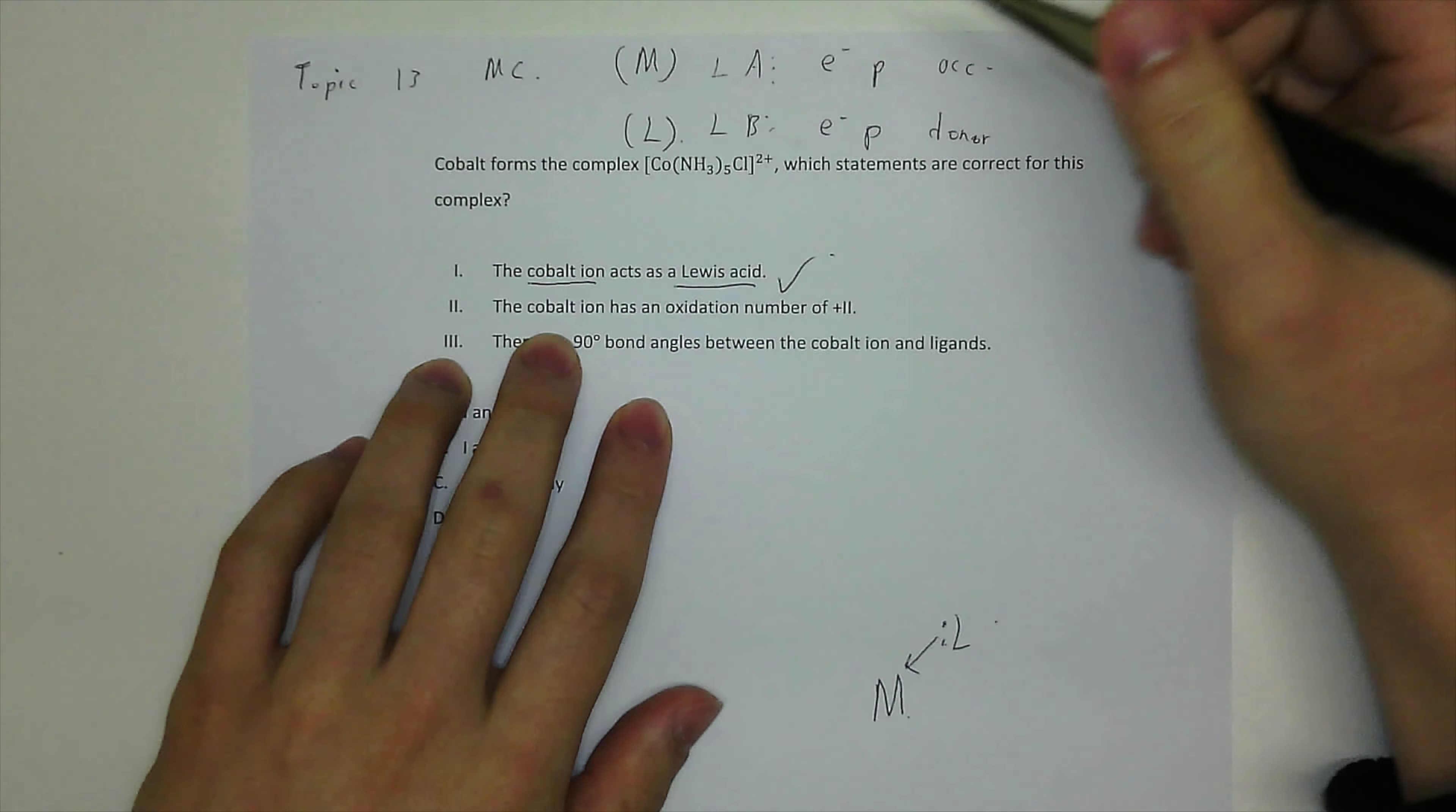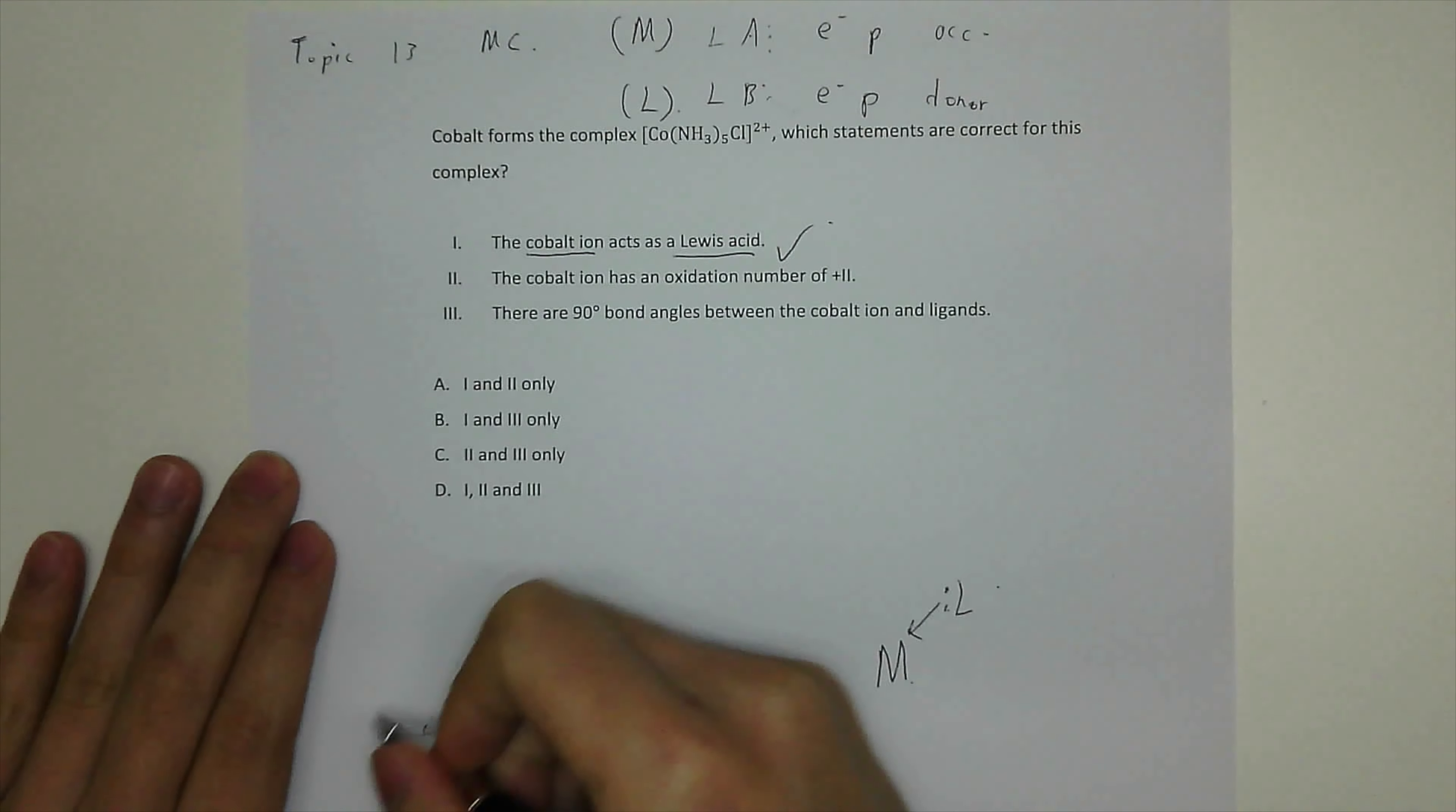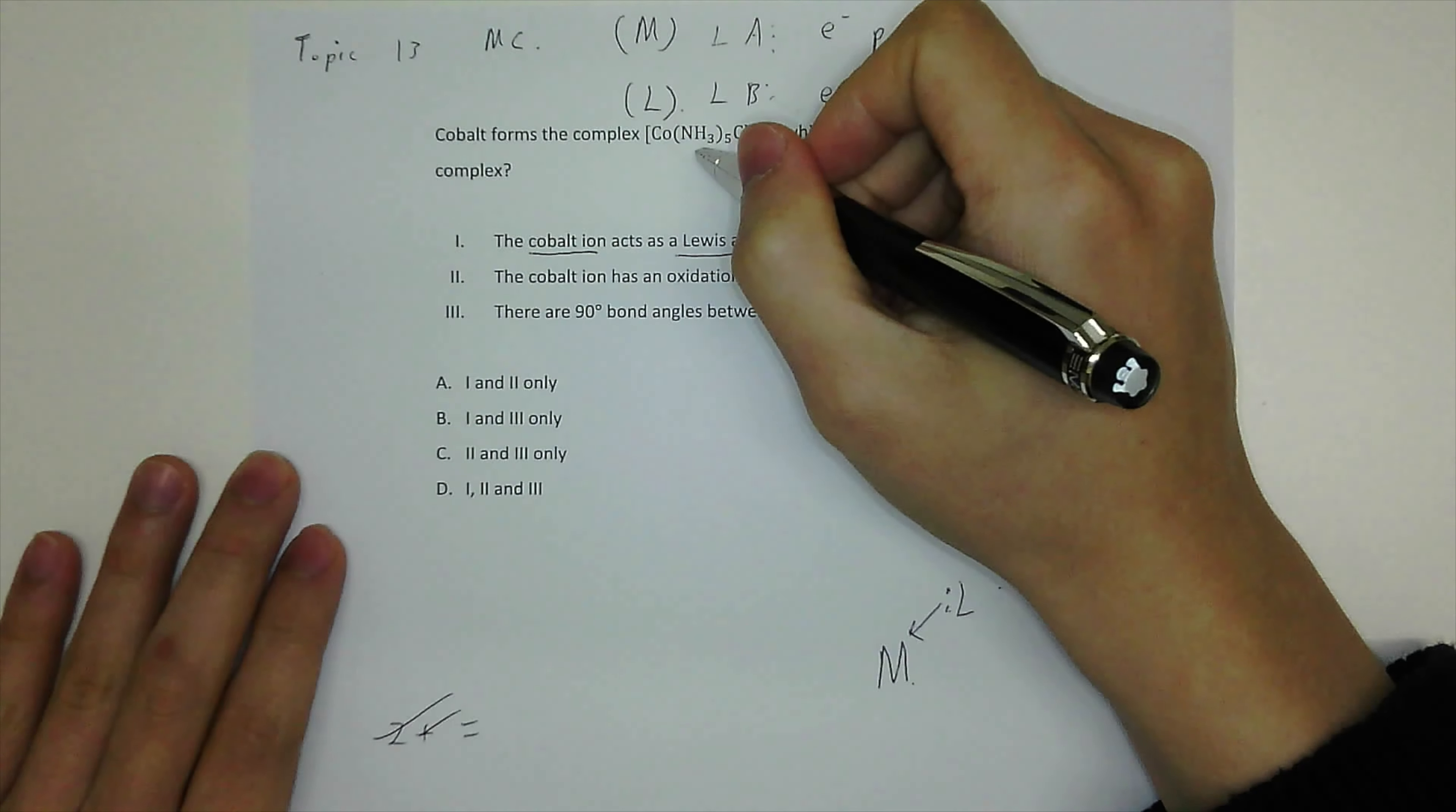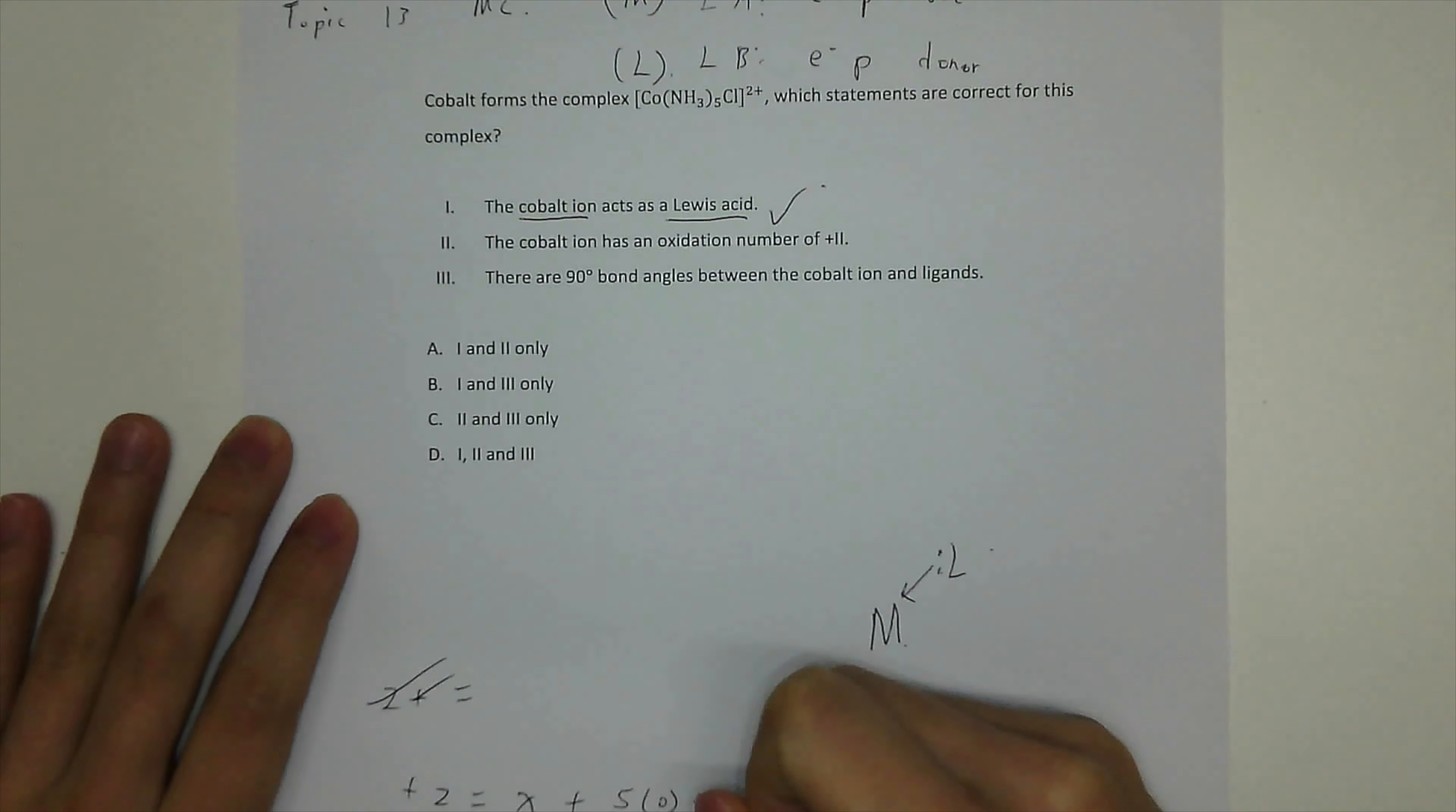sum of the charge of the ligand and the metal ion equals to the charge of the complex ion. So two positive charge equals, plus two is equal, the oxidation number for cobalt is unknown, so let's be x, plus five ammonia ligand. Ammonia is NH3, it's neutral, so will be zero.